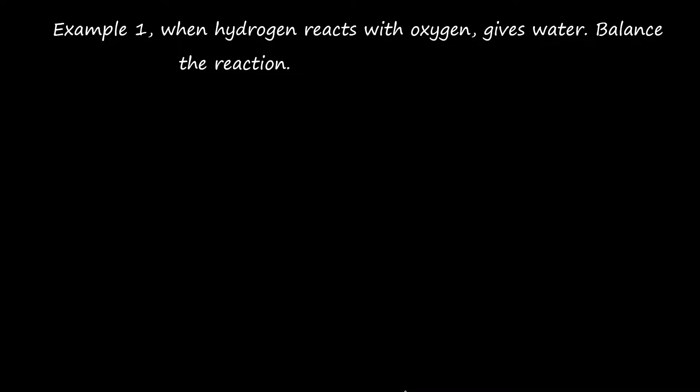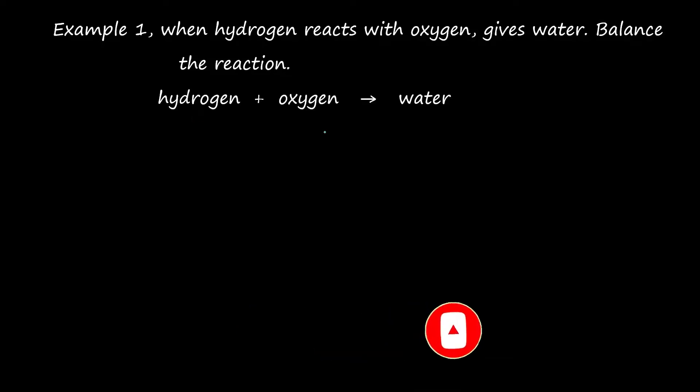When hydrogen reacts with oxygen, it gives water. To balance the reaction, the reactants are hydrogen and oxygen, and the product is water. The first step is to translate the statement into a skeleton equation — that is, a chemical formula arrangement in equation format.